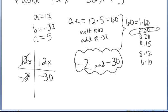12 over negative 2 leaves 6x minus 1. 12 divided by 6 leaves 2x.